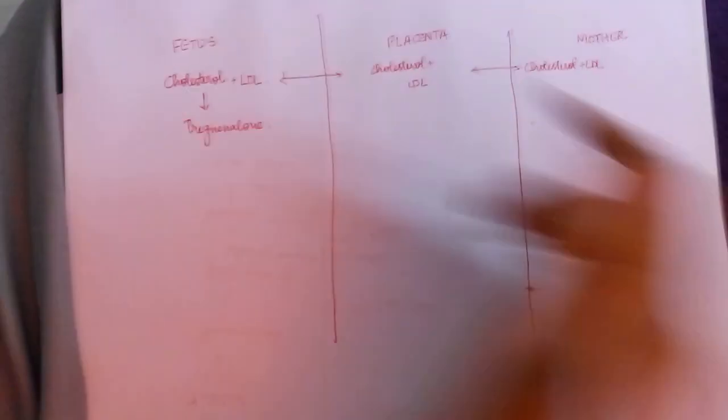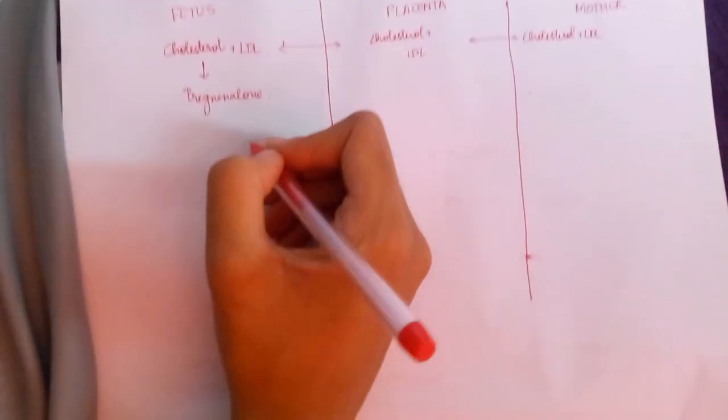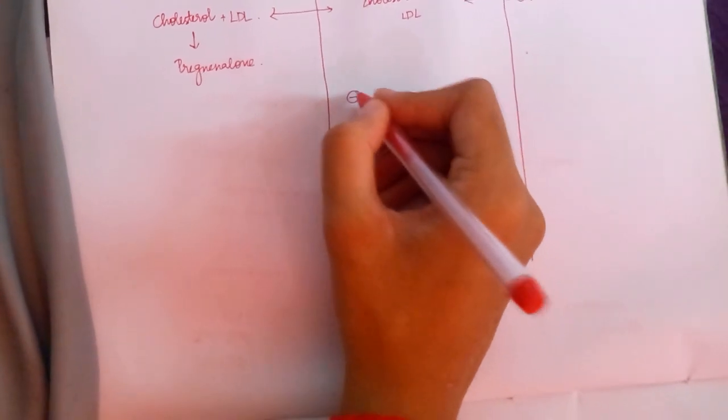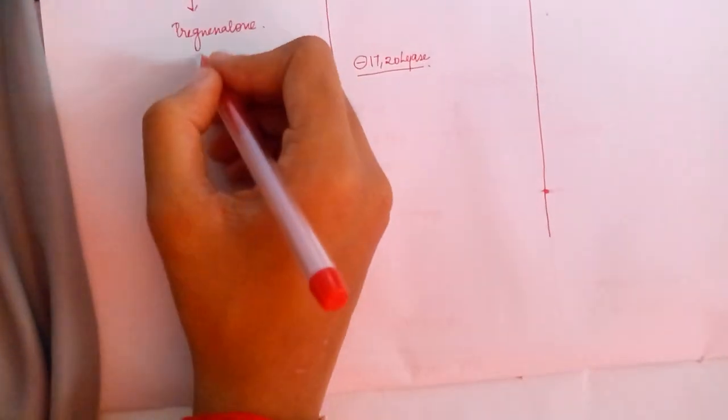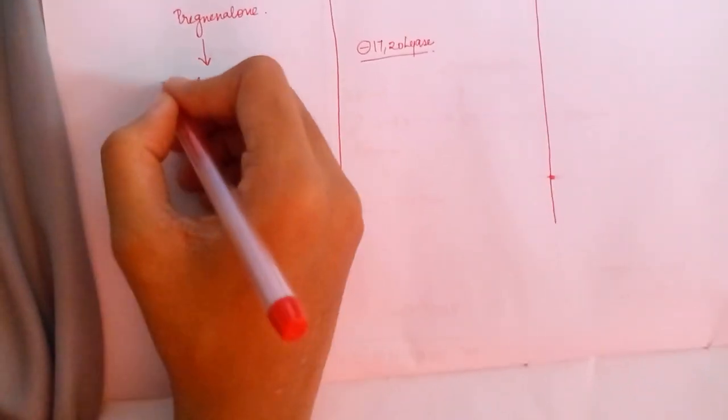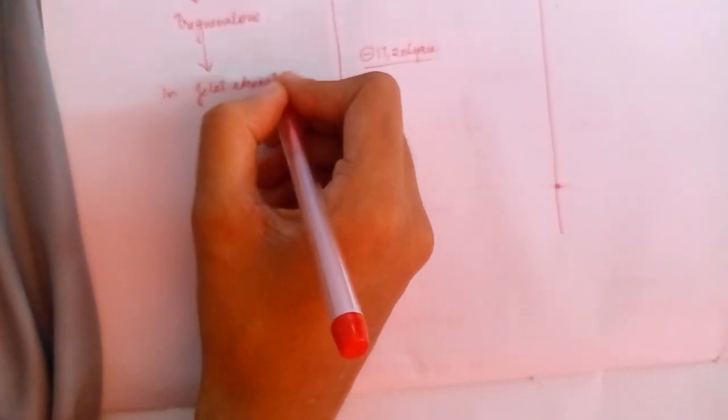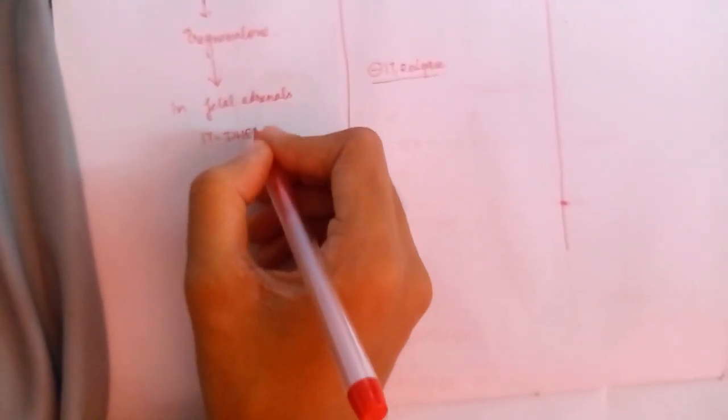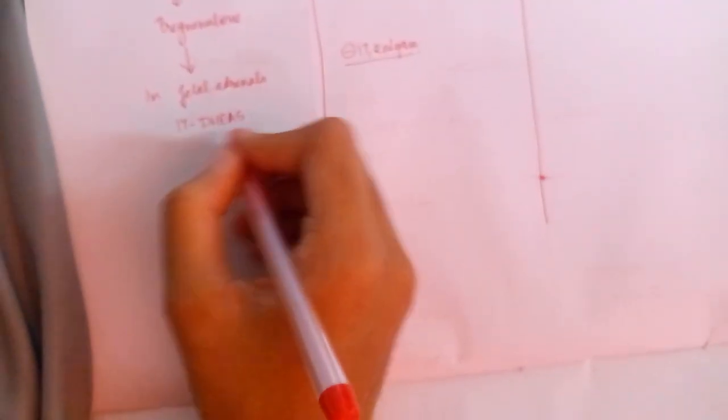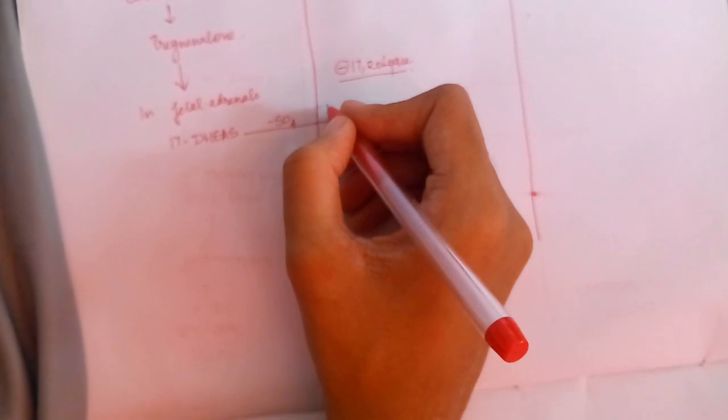This pregnenolone cannot get converted into dehydroxyepiandrostenedione because of the absence of 17-20 lyase in the placenta. The fetal adrenals convert pregnenolone into 17-dehydroxyepiandrostenedione, and this is transported to the placenta with the removal of a sulfate group with the help of the enzyme sulfatase.